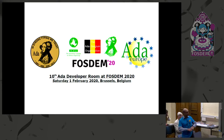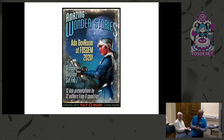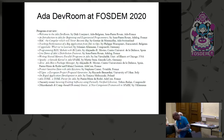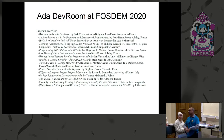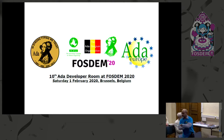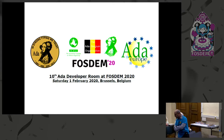Ada Europe is the federation of all national Ada organizations, and it especially organizes a yearly conference. This year it's in the week of 8th of June. It's a place where you can meet people from the Ada world, from all over the world and Europe mainly, but not only. You generally have very interesting technical papers as well.